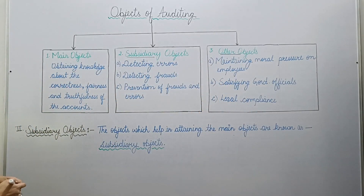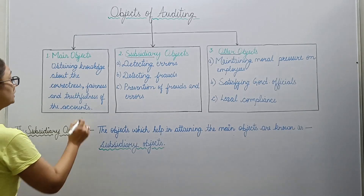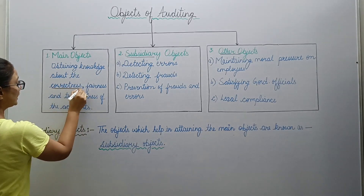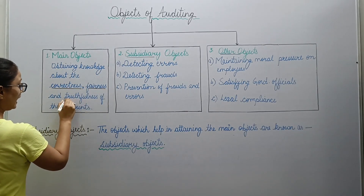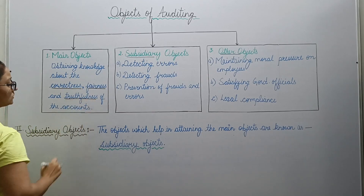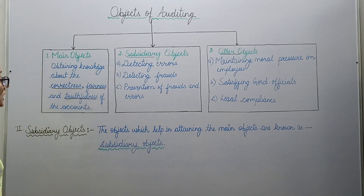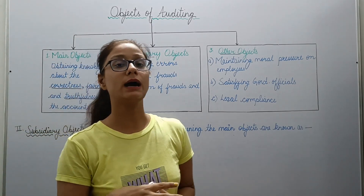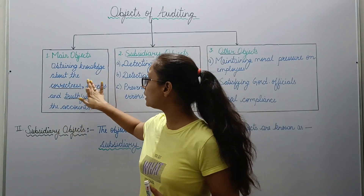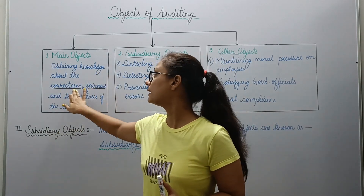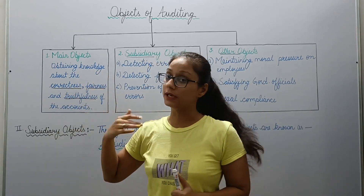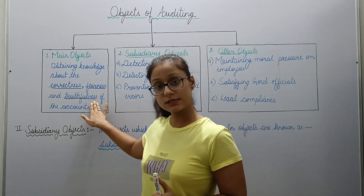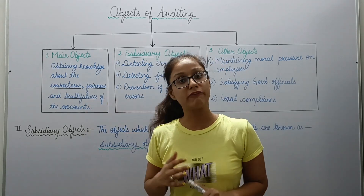The main objective of auditing is that you gain knowledge about the correctness, fairness and truthfulness of the accounts. The ultimate goal of doing an audit is to check whether the accounts you have prepared are correct, whether they are giving a fair view, and whether they are showing truthfulness.